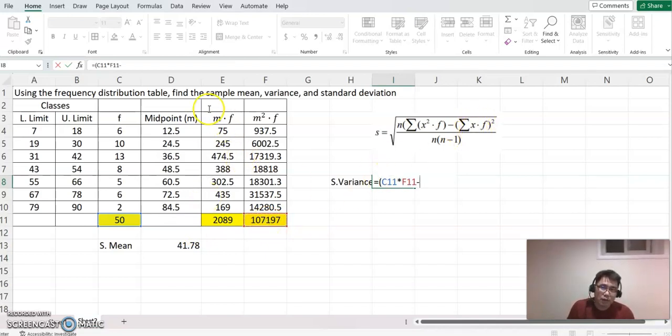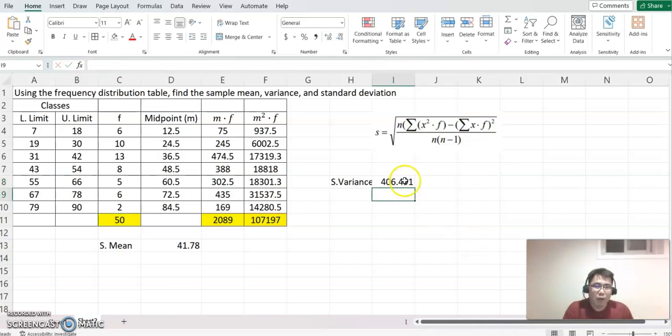Don't forget shift number six then it becomes power key and square, and close the parentheses. Now divide by and open the parentheses again. N is 50, so we can do 50 times n minus one, which is 49. Close the parentheses and enter. That will be our sample variance, 406.495.